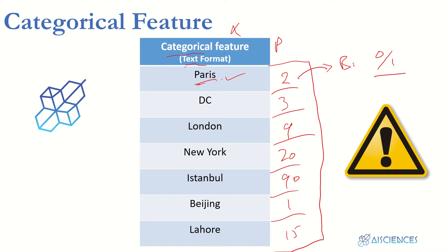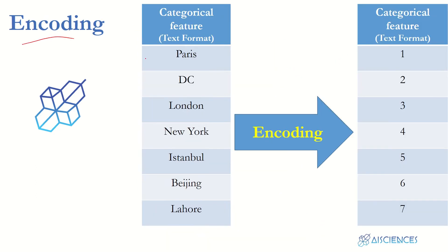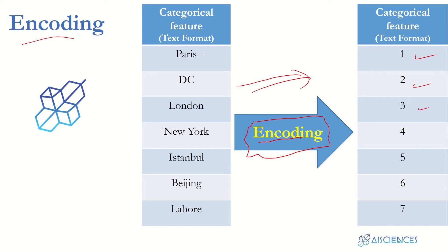In encoding, our problem is that the computer cannot understand textual format — it only understands numeric or digital format. Encoding helps us achieve our goal by converting these categorical textual features into numeric format. For example, we assign code 1 to Paris, so wherever Paris appears the value will be 1. DC gets code 2, London gets code 3, and so on. That's how encoding works.